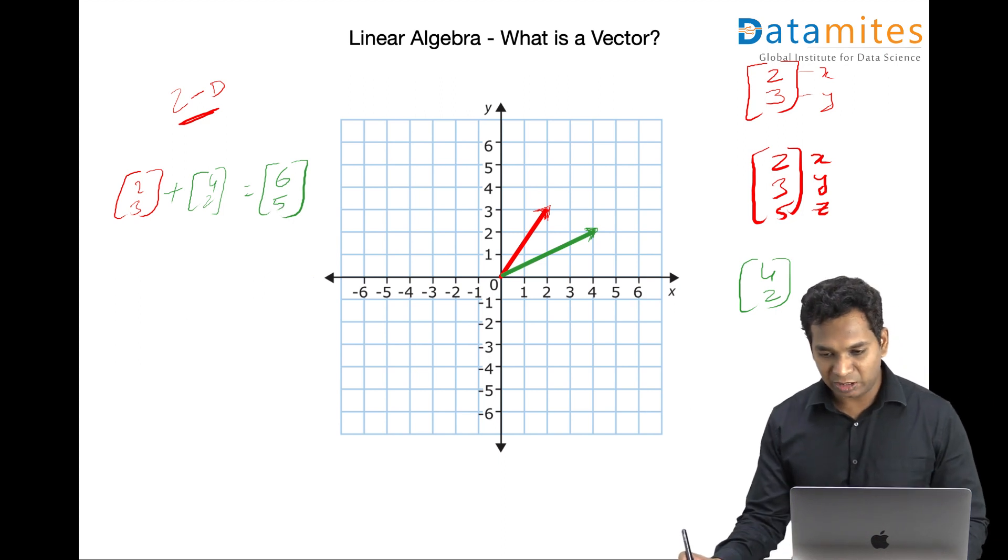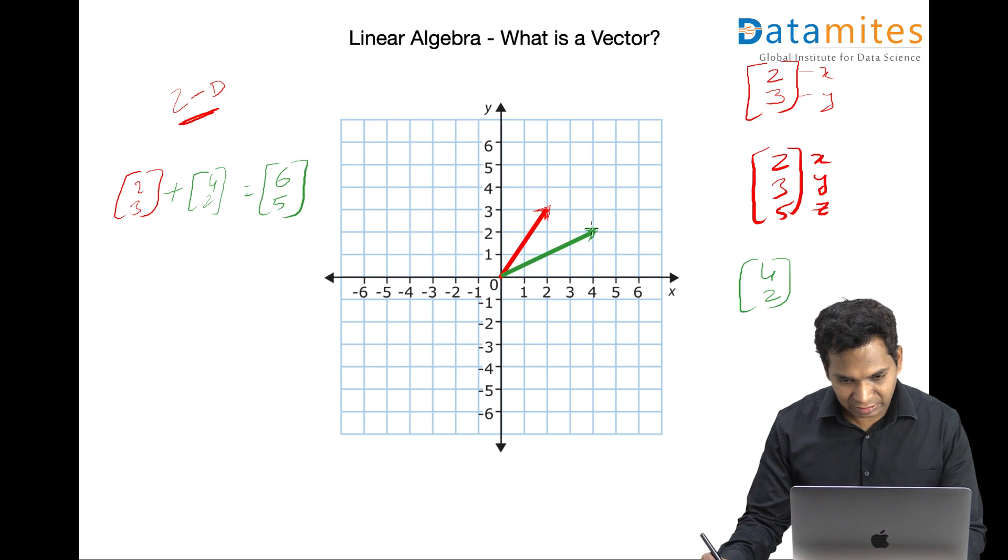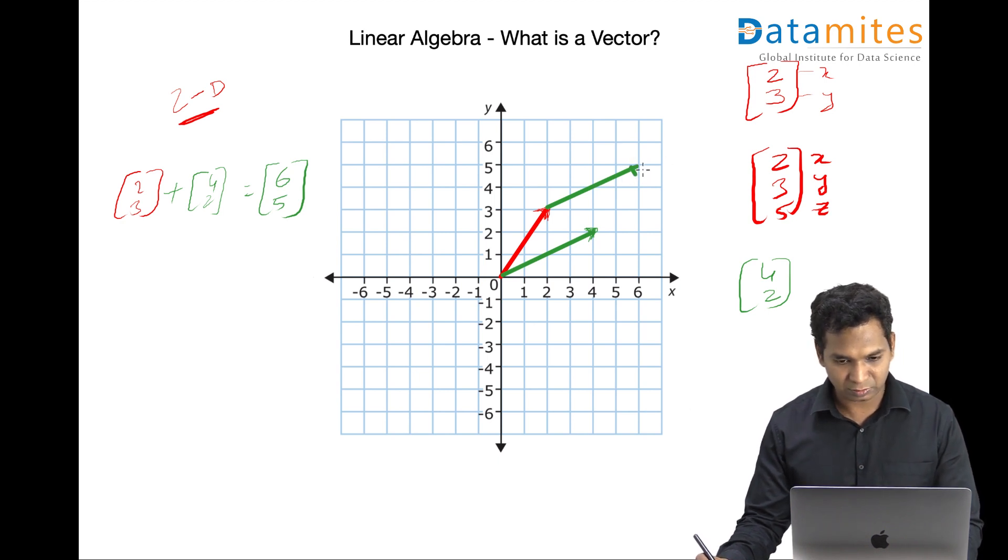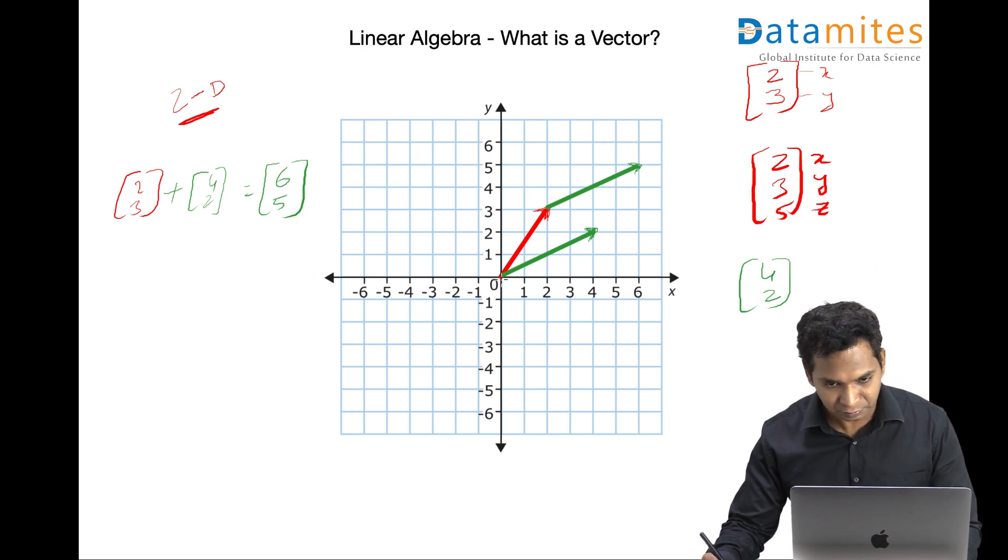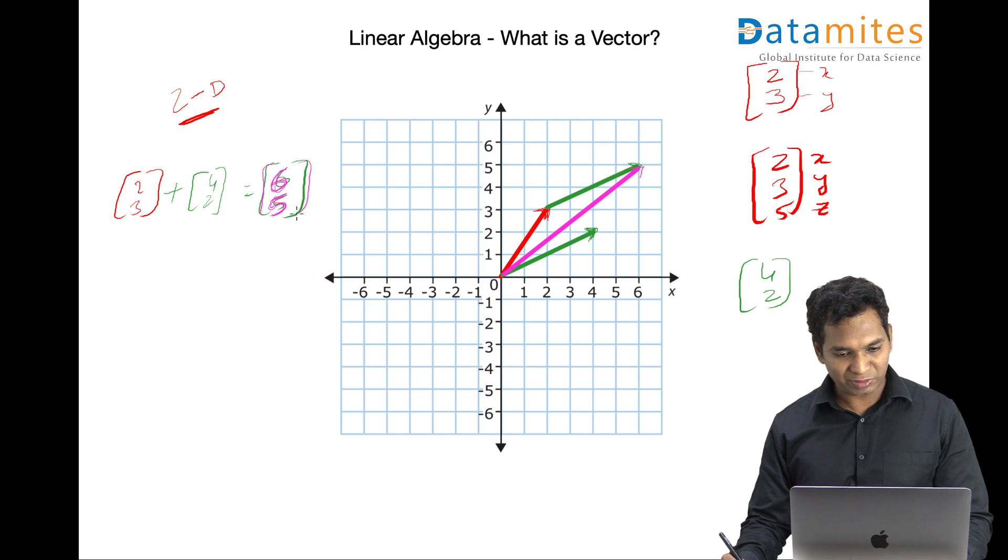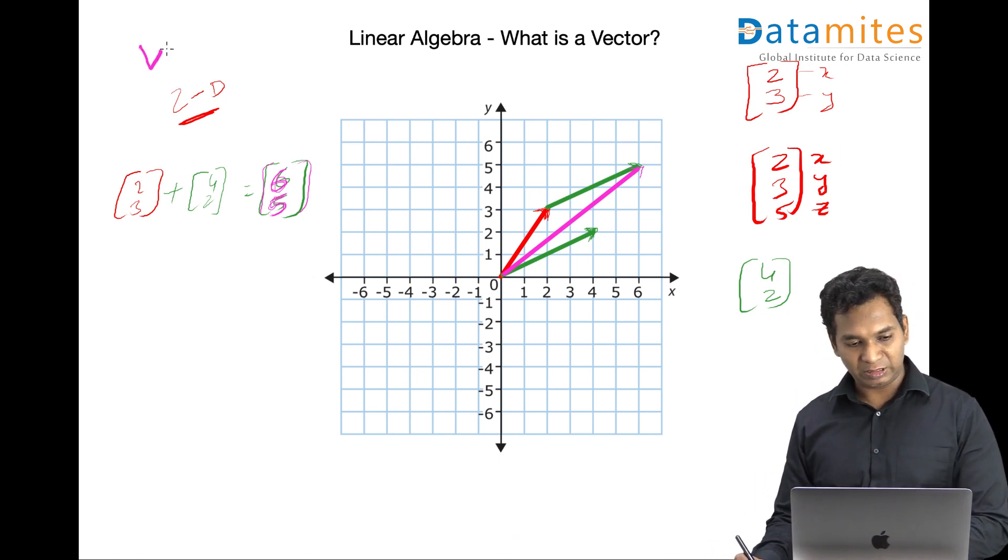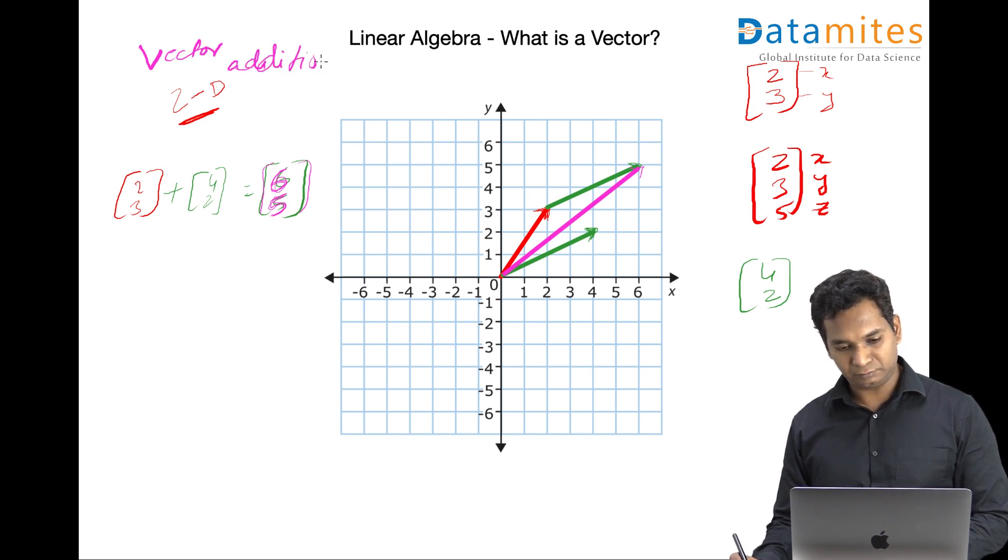Visually if you look at, we can visualize this as, this vector can be drawn over here, four units this side, and then two units. So something like this. And then we can simply add both of the vectors resulting in a new vector. And this vector would be as we have calculated six units in your x axis, the violet one. So six units in your x axis and five units in your y axis. And this is a simple vector addition.